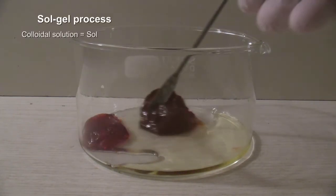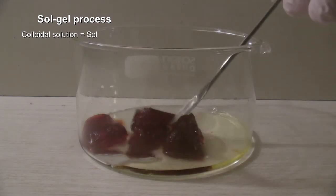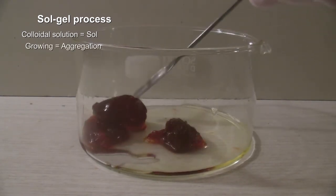The whole process is also called sol-gel process. In it, the colloidal solution is called a sol. The growth of the particles is called aggregation and the precipitate is called gel.